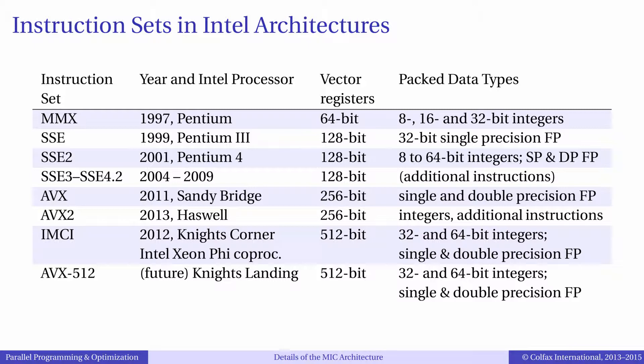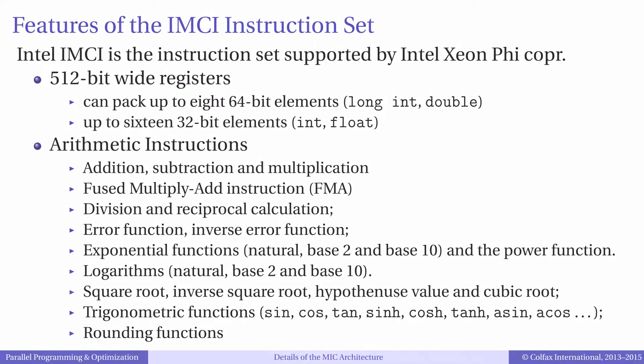With this method, porting an application from CPU to Knight's Corner or Knight's Landing only requires recompilation, and does not require rewriting the vector instructions. Even though we will rely on the compiler to implement vector instructions, the programmer must know what kind of instructions can be vectorized. This helps to design code in a way that the compiler can effectively vectorize.